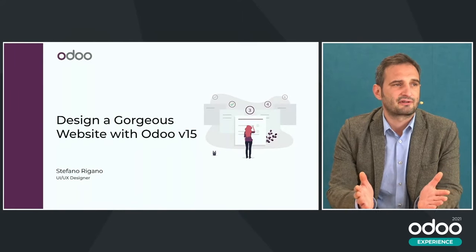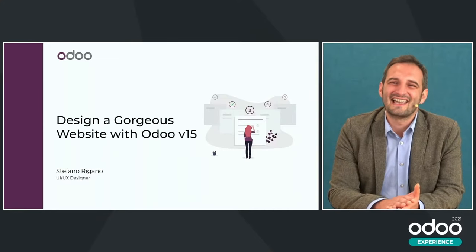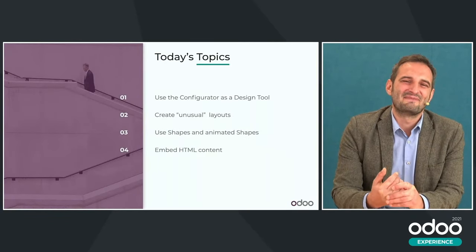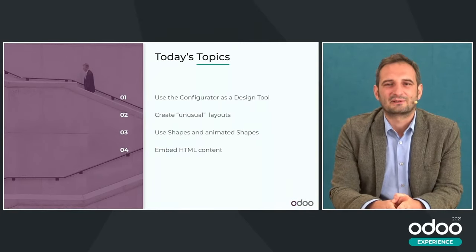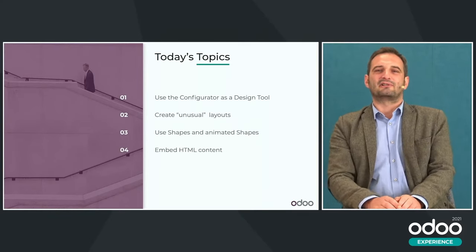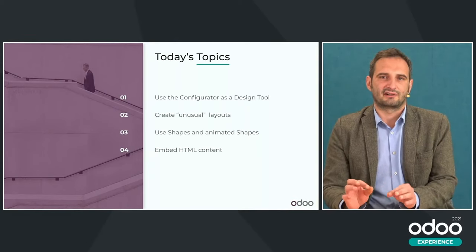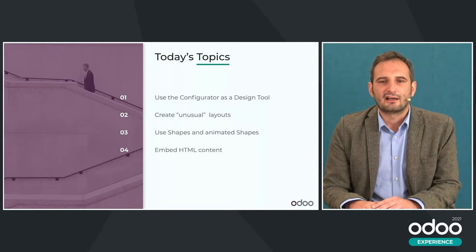I think that's enough for an introduction. So, today's topic will be how to use the configurator as a design and brainstorming tool, how to create unusual layouts with Odoo using just default snippets, how to use shapes and animated shapes directly into images, and finally, how to embed HTML content. I think we are ready for a demo — let's go.